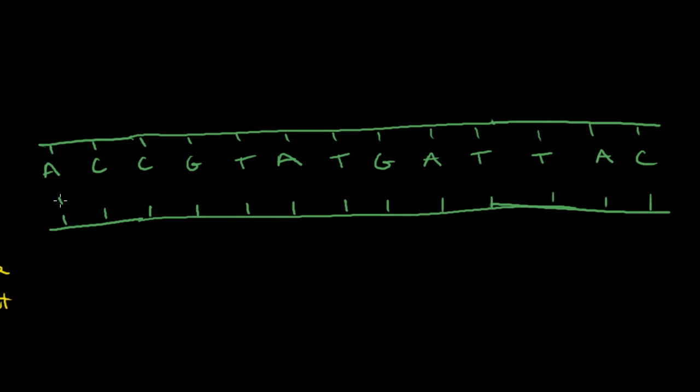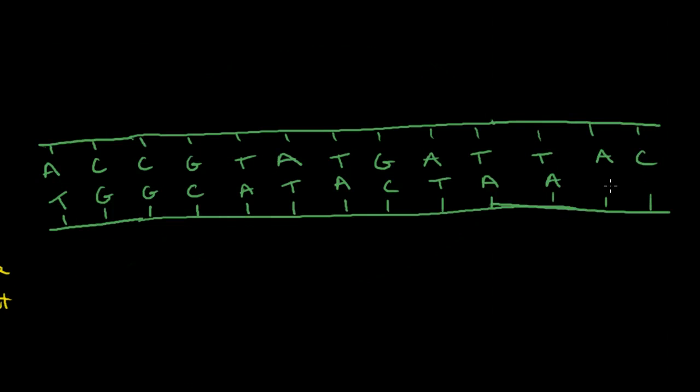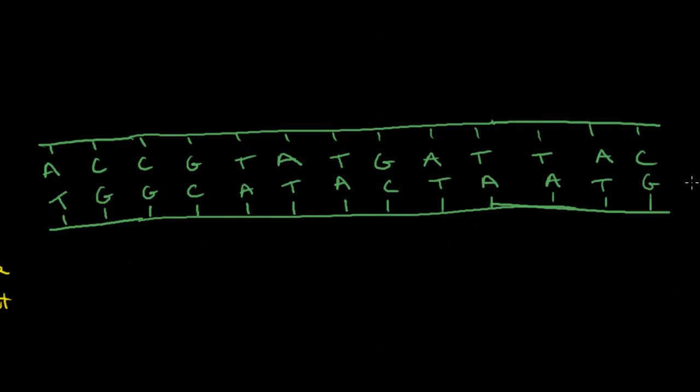Alright, so I've got my random sequence. I'm just foreshadowing, but you need to know base pair rules. For DNA, A's bond to T's, and C's bond to G's across the two strands. So A bonds to T, C bonds to G, C to G, G to C, T to A, A to T, T to A, G to C, A to T, T to A, T to A, A to T, and C to G. And so now we've got our double-stranded DNA sequence.